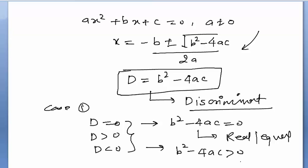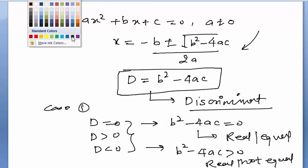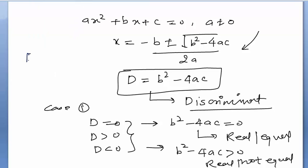The third condition is D less than 0, meaning b² − 4ac < 0. In this case, the roots are not real.